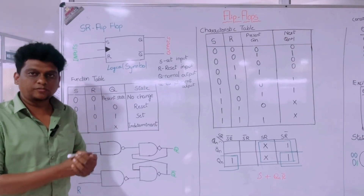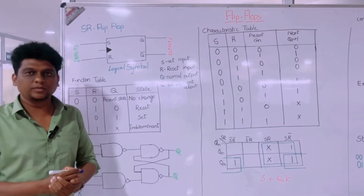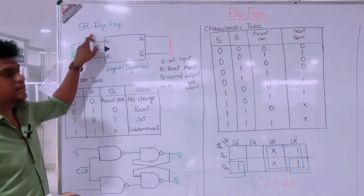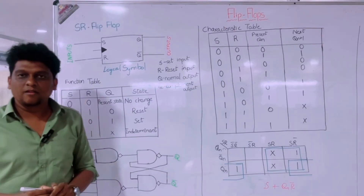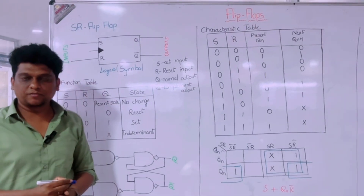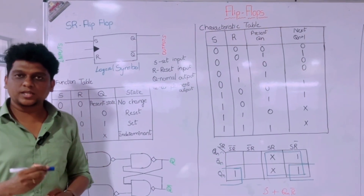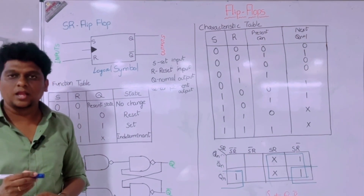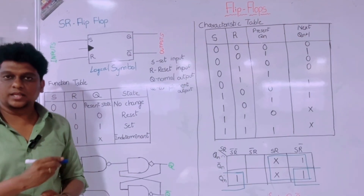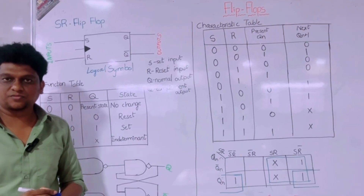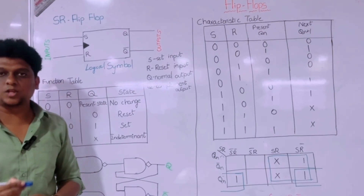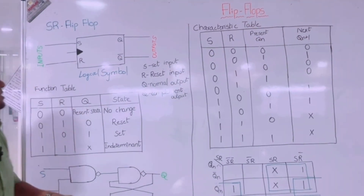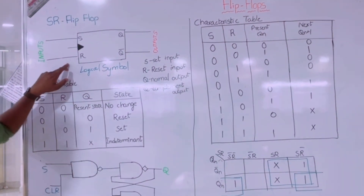Welcome to the video on types of flip-flops. The first type is the SR flip-flop, which stands for Set-Reset flip-flop. A flip-flop is a type of sequential circuit used as a memory element to store binary information. It is a building block for registers, counters, and some memory devices. Let's see the working of the SR flip-flop.